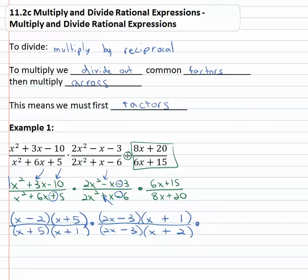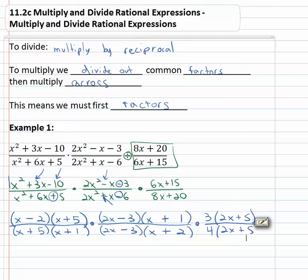And then finally the last polynomial — always starting with the GCF. Six x and fifteen are both divisible by three, leaving us with two x plus five. No further exponents so we're not going to do any more factoring. Eight x plus twenty are both divisible by four, leaving us with two x plus five. And we finally have it fully factored and are ready to identify the common factors that can divide out.